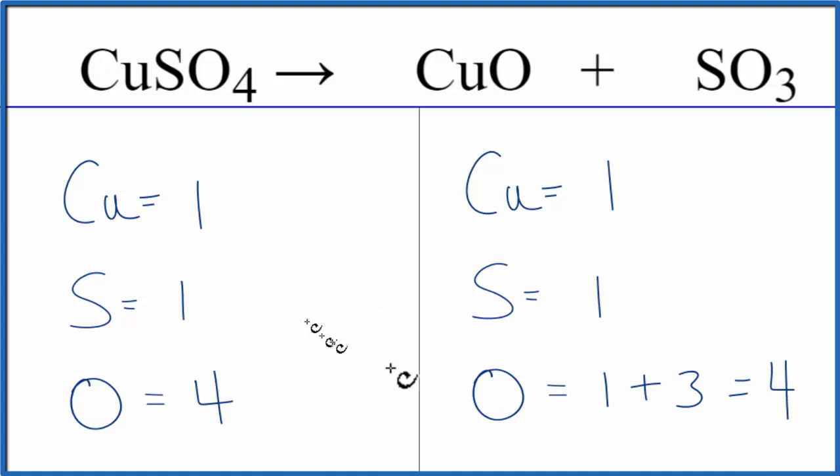So as we look at these coefficients, we can see they're the same on both sides. This decomposition reaction for CuSO4 is already balanced. We don't really need to do anything to it. If you wanted to report the coefficients, you could say 1, 1, 1, although we don't write them for the equation.